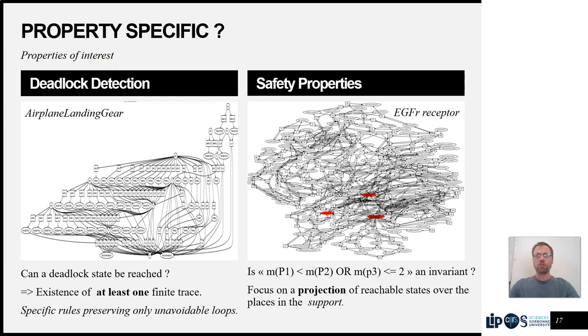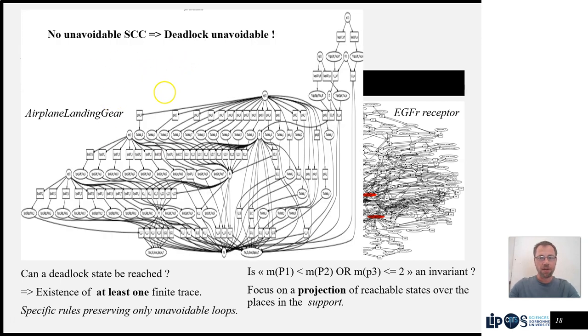This means in the end we can analyze this smaller net using any technique you like. Why are these reduction rules property-specific? We separate two cases. The first one is deadlock detection, and we're based on the idea that for there not to be a deadlock, it must be the case that there's an unavoidable loop within the net where some tokens will be trapped and will indefinitely go around. Therefore, there's always a transition that can be fired and there is no deadlock. This means that the only thing that is really interesting are SCCs in the net. If we look at this example, we can see in fact just looking at the structure there's no SCC, so there must be a deadlock and we can conclude immediately.